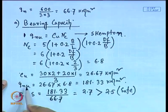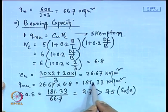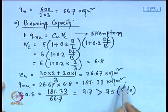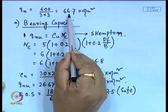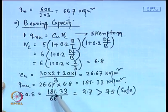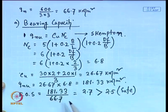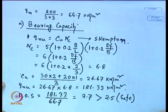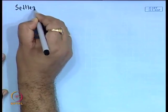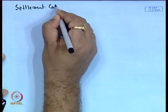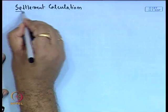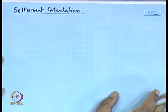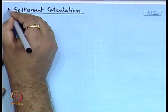Factor of safety = 181.33 / 66.7 = 2.7, which is greater than 2.5. So the footing is safe against bearing capacity failure. Next we will calculate the settlement, considering the same footing dimension of 3 m × 3 m.